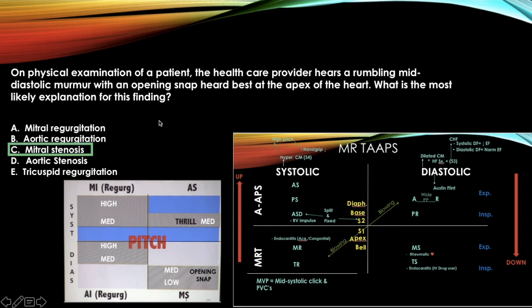The next question has a rumbling mid-diastolic murmur with an opening snap — mitral stenosis based on the pitch chart. They also give a location, so you can confirm with Mr. Taps.